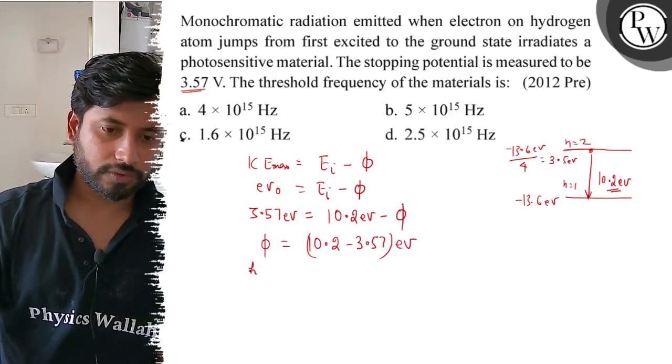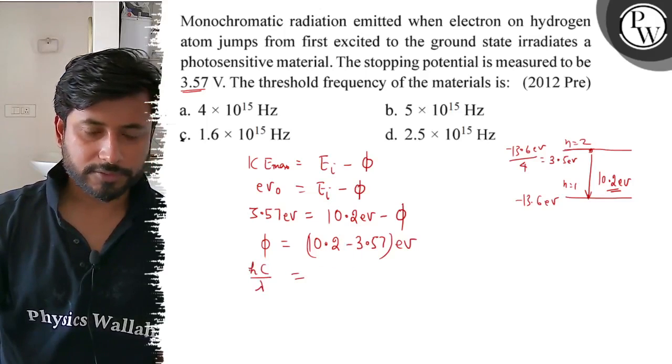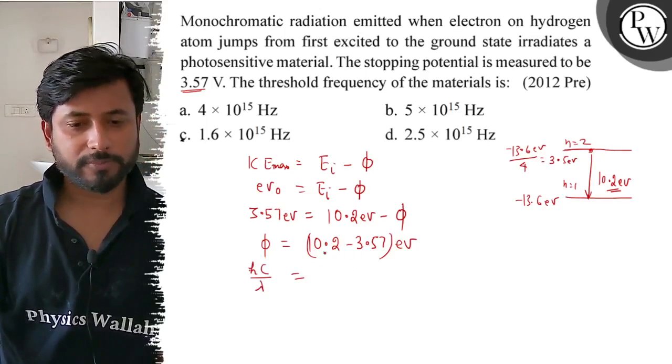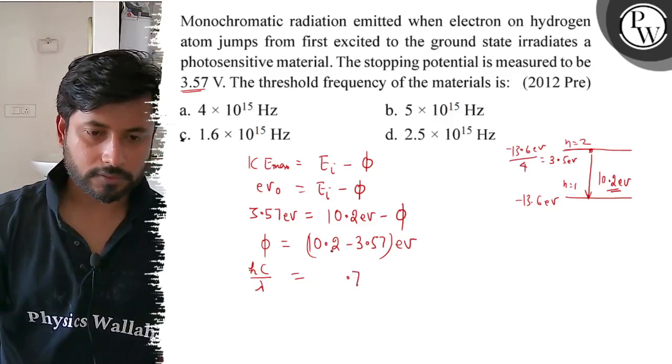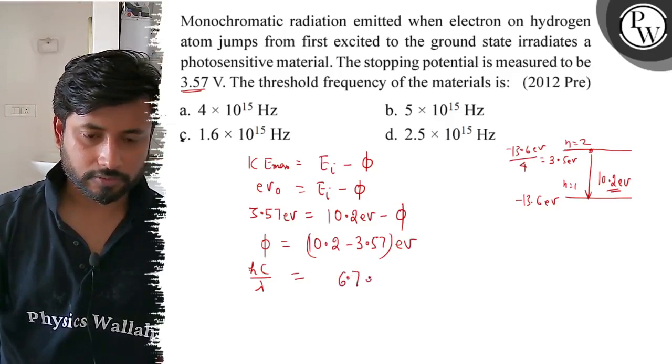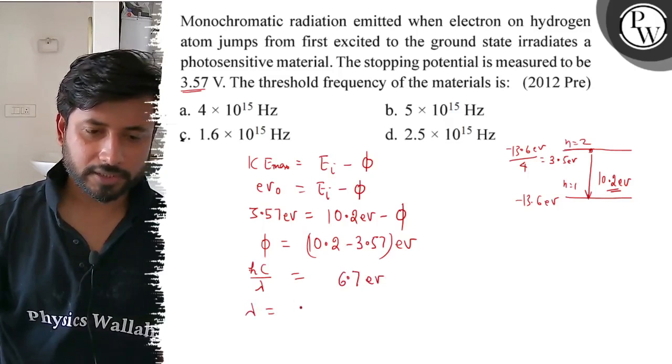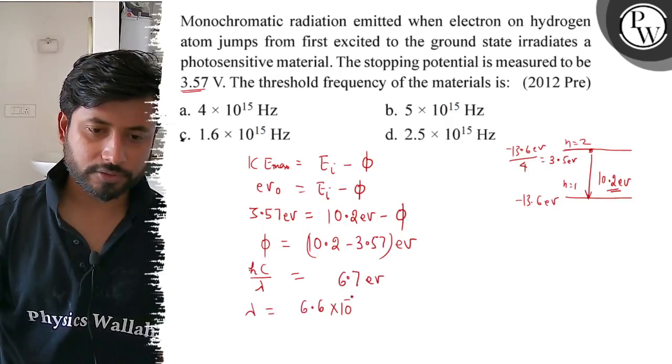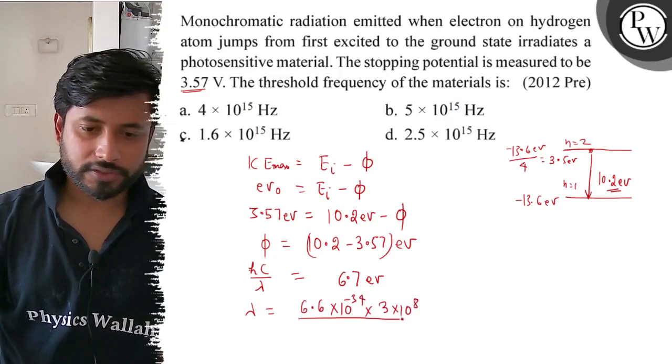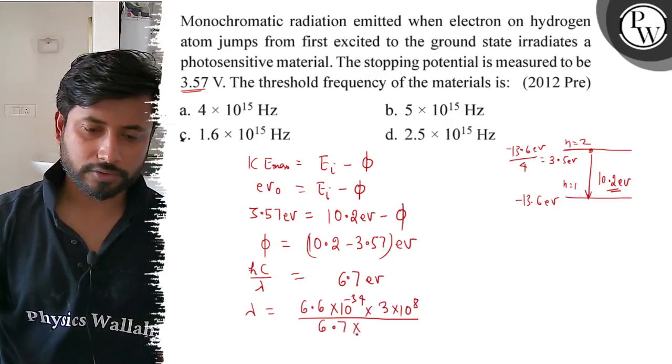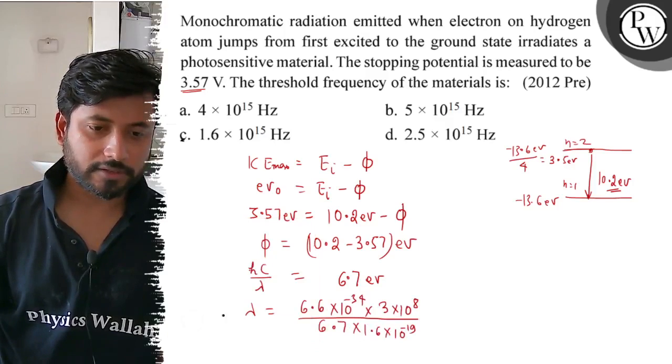The value of φ is approximately 6.7 electron volt. Now let's take hc by lambda equals to 10.2 minus 3.57, which is 6.7 electron volt. Lambda value is h (6.6×10^-34) times c (3×10^8) divided by 6.7 electron volt (1.6×10^-19 joules).